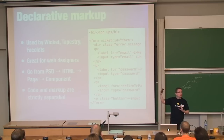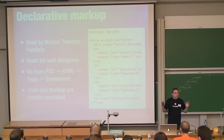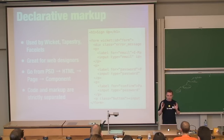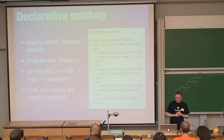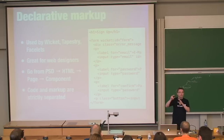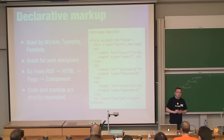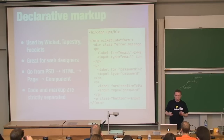With declarative markup, people who mock up your web application screens in Photoshop can go from Photoshop to HTML, show that to clients, and once the client approves, you take that HTML, put it in your Eclipse or NetBeans project, augment it with Wicket identifiers, and start writing Java code. With Wicket, code and markup are completely separated — unless of course you're doing JavaScript in the browser.